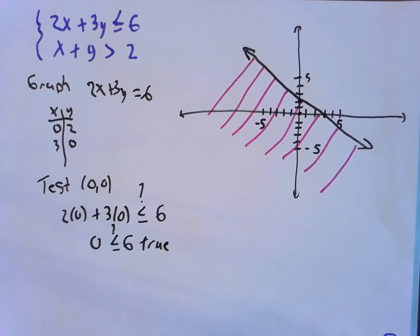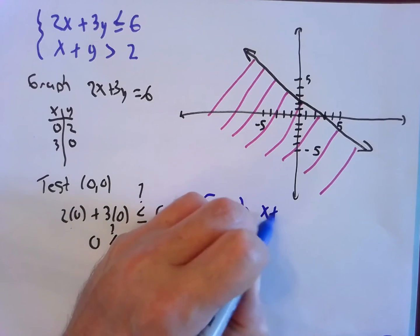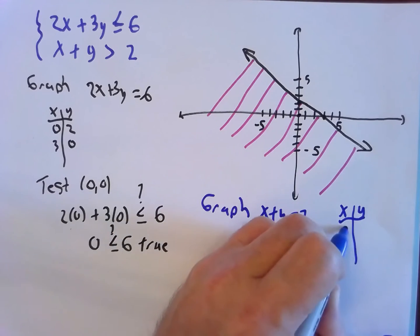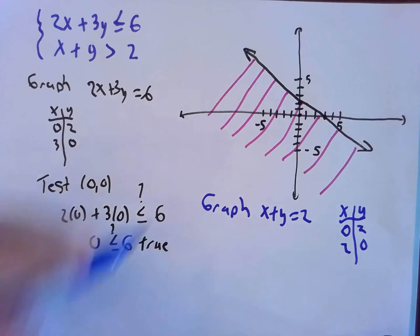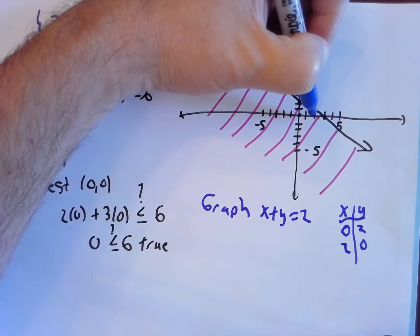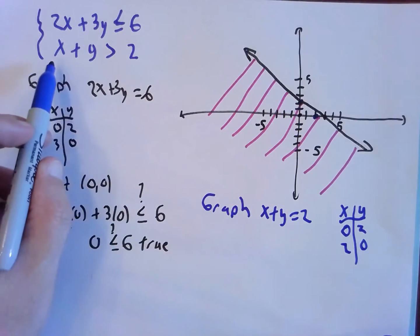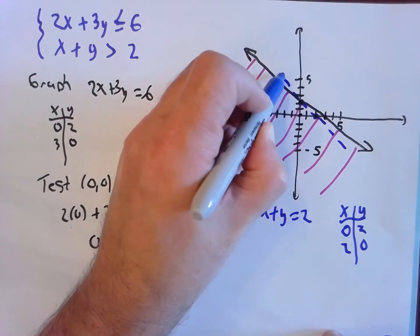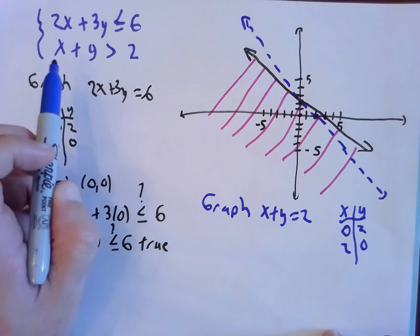Now we repeat the process for the other line. We graph x plus y equals 2 on top of the picture we already have. Using an xy chart: when x equals 0, y equals 2; when y equals 0, x equals 2. So we have the points (0, 2) and (2, 0). We draw a line through them. Notice there is no equal sign here, so we draw a dashed line.